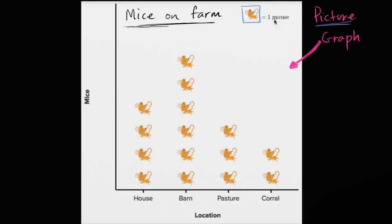So what is this picture graph telling us? Well, the title says Mice on Farm. So this tells us how many mice are in the different places in a farm. And you could see here the different places where we might find mice.